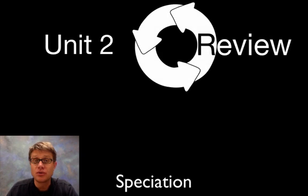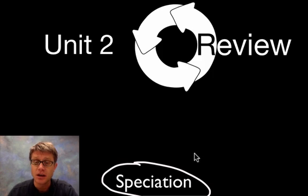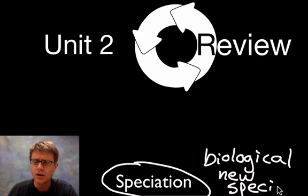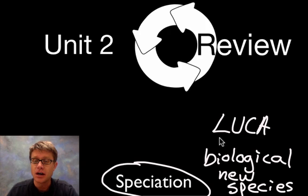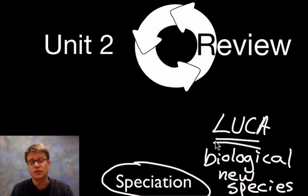Hi, it's Mr. Andersen. Welcome to the unit 2 review. In this podcast I'm going to talk about speciation, extinction, and mechanisms of speciation. But before we get started we should define what speciation is. Speciation is essentially a biological process by which new species arrive. All life on our planet started with what we call the last universal common ancestor, and all other species arose through speciation — the formation of new species.